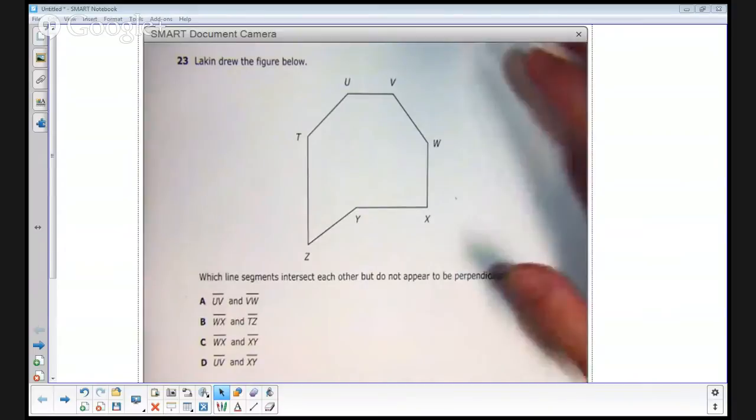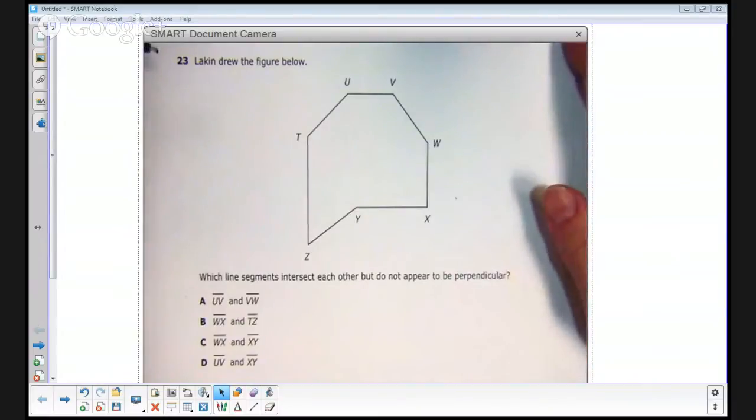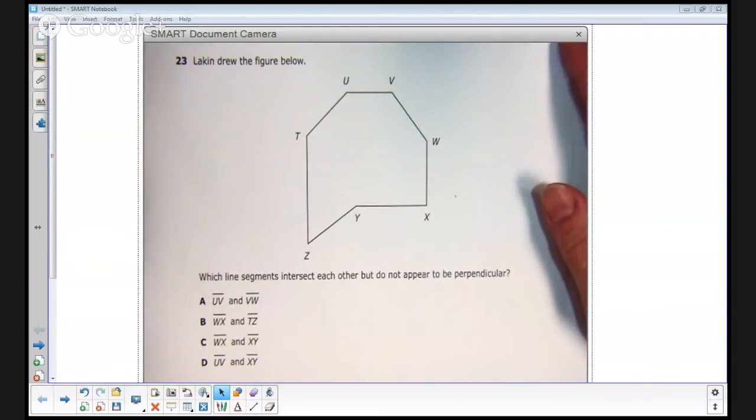Let's read the item. Lakin drew the figure below. Which line segments intersect each other but do not appear to be perpendicular?